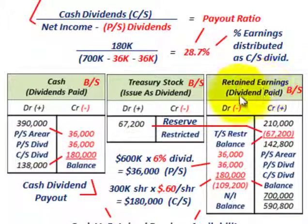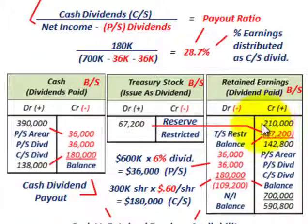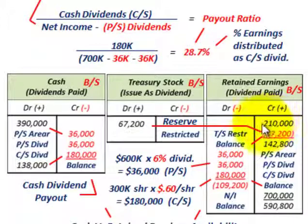Moving to retained earnings: if you don't have enough in retained earnings, you can't pay dividends, and again preferred stock gets paid ahead of common stock. If a company accumulates a lot in retained earnings but has a very low common stock dividend payout ratio, you'd wonder why — it may simply be that they want to retain earnings for other purposes.